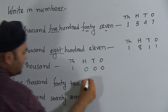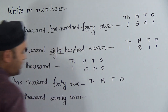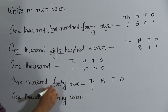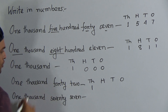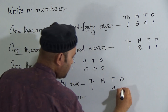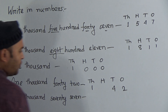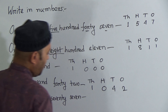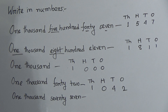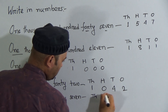Number four: one thousand forty-two. We have thousands, hundreds, tens, and ones places. One thousand — write one in the thousands place. Forty-two — write four in the tens place and two in the ones place. The hundreds place is blank, so write zero there. So one zero forty-two is called 1042.